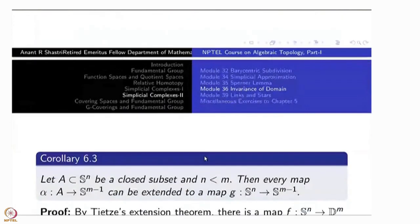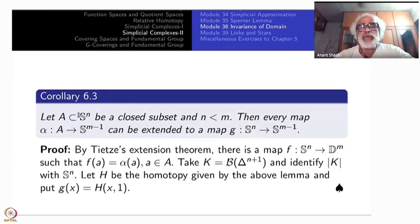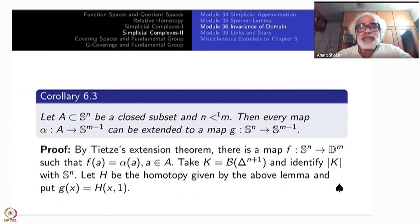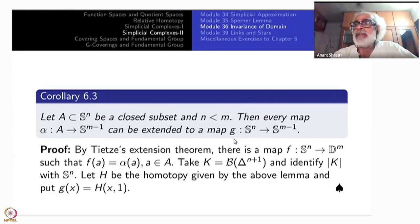The first step is a ready-made homotopy-theoretic corollary. Take a closed subset A of S^n and assume n is less than m. Then every map alpha from A to S^{m-1} can be extended to a map from S^n to S^{m-1}. If you replace S^{m-1} by a Euclidean space, this is nothing but Tietze's extension theorem — but with a sphere here, it is not easy. It comes immediately as a corollary to Lemma 6.6.